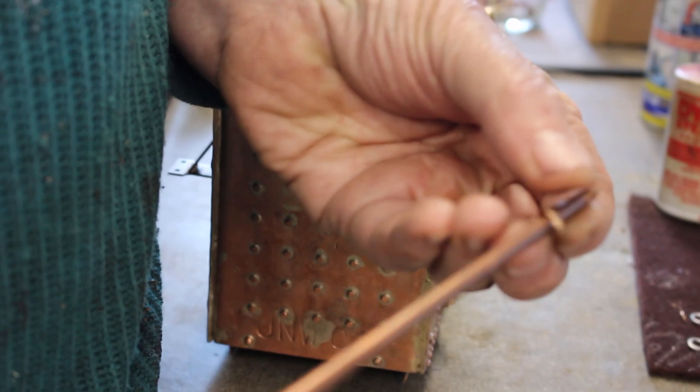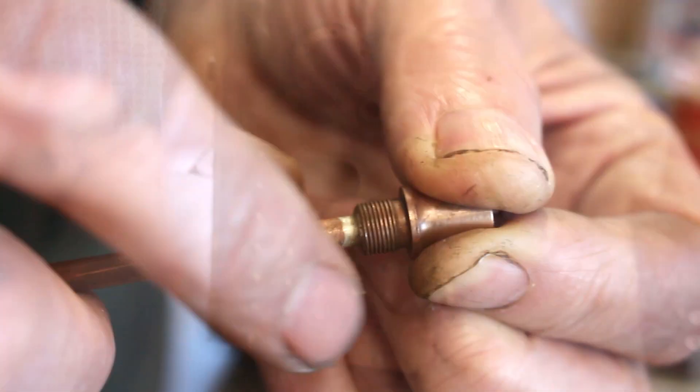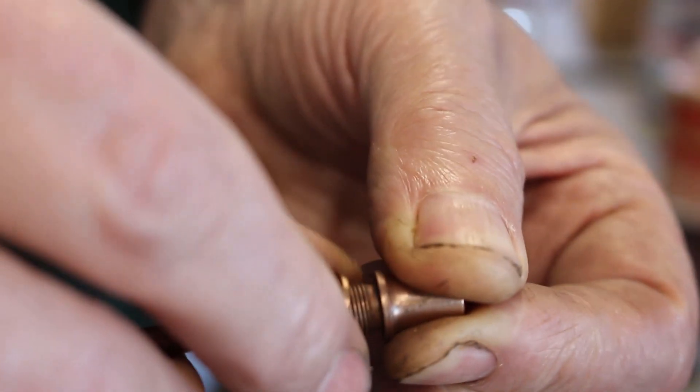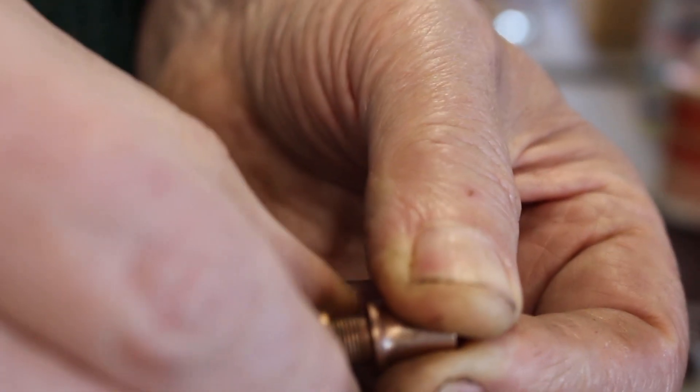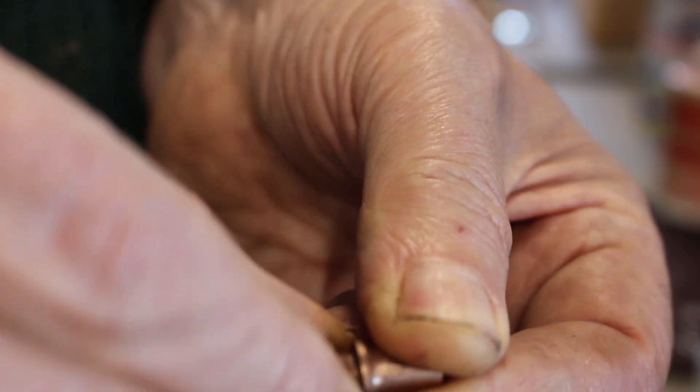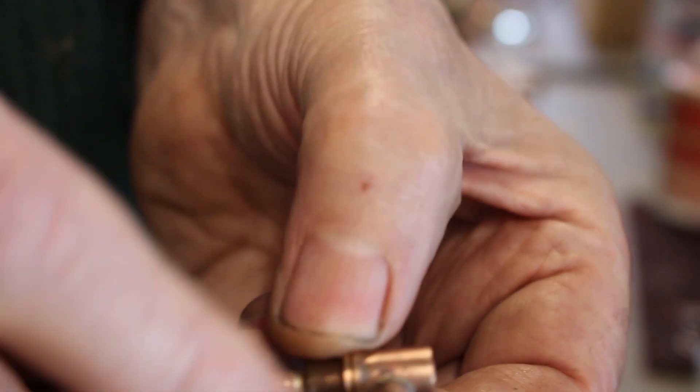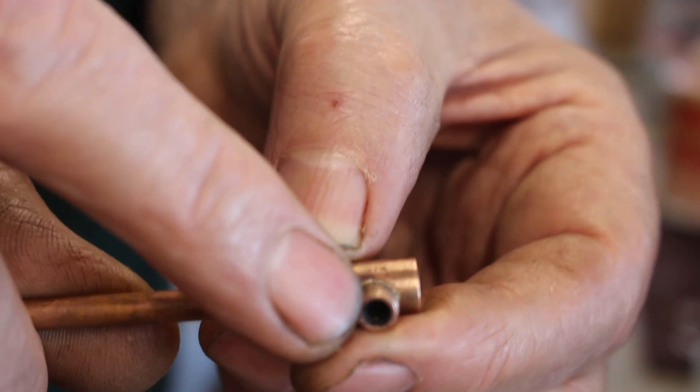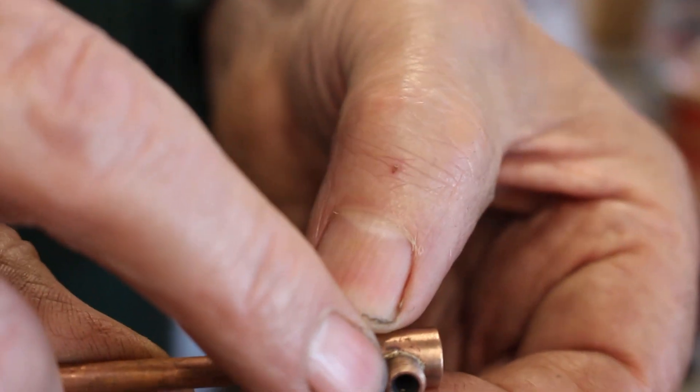Just to fit the sealing washer. I'm just fitting a copper washer. I've machined this to the right thickness to give the correct orientation so that this nozzle here is in the right position.